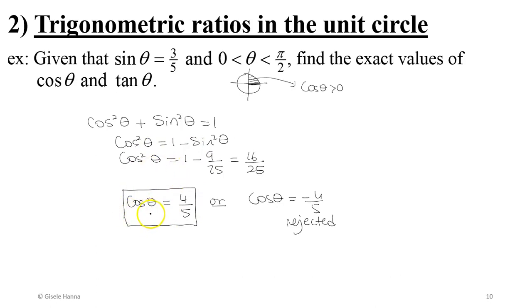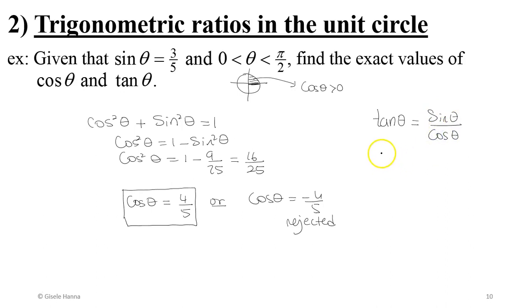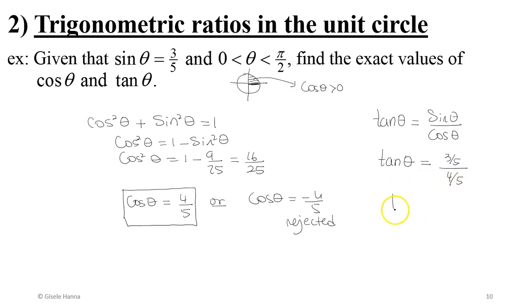With sin θ = 3/5 and cos θ = 4/5, we can find tan θ = sin θ / cos θ = (3/5) / (4/5) = 3/4.